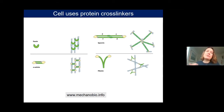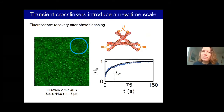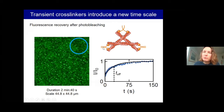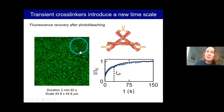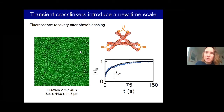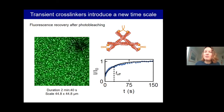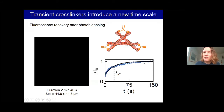We can demonstrate the cross-linker timescale experimentally by fluorescence recovery after photobleaching (FRAP): the fluorescent label is on the cross-linkers, we destroy the fluorescence in a circle with an intense laser, and then watch it recover. The fluorescence intensity comes back on a second timescale, showing the typical off-rate of the cross-linkers.